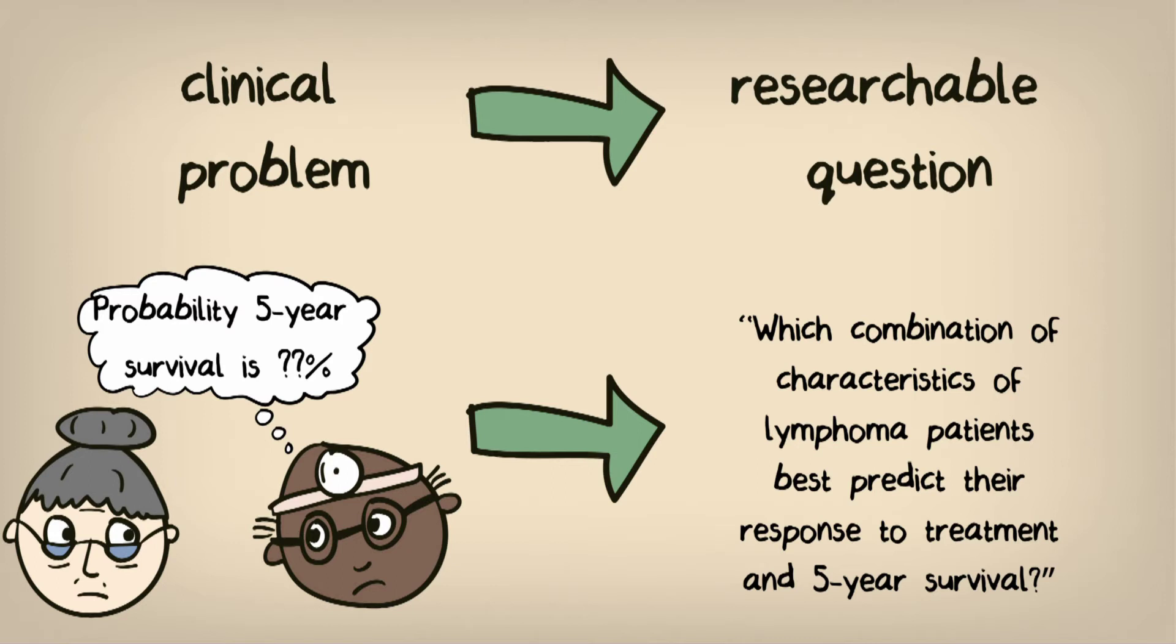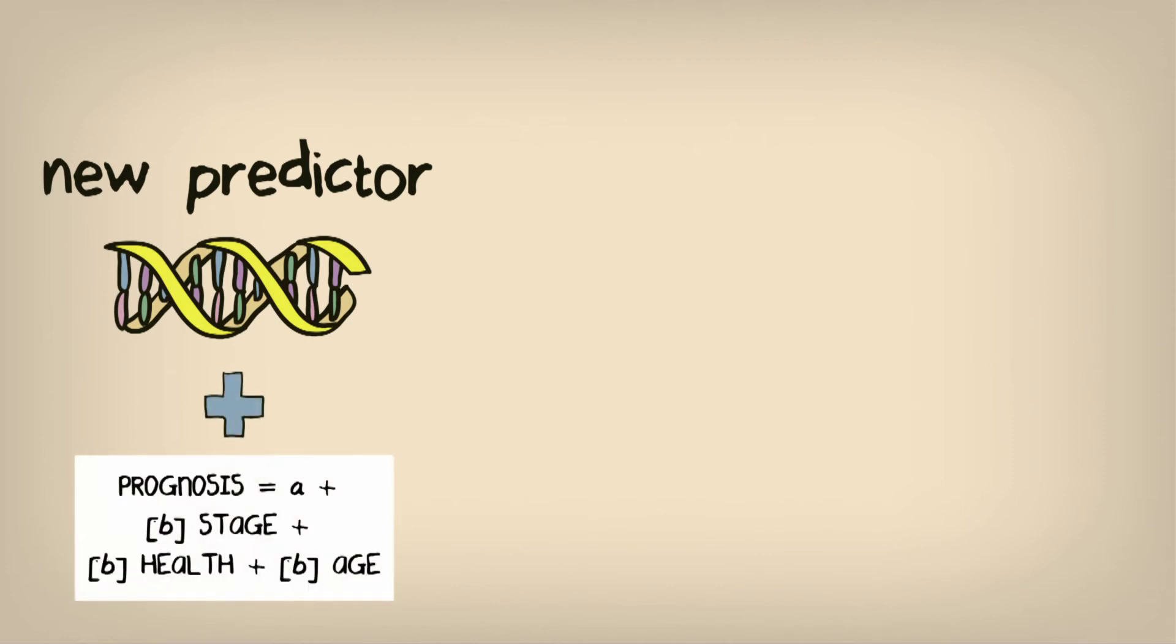Alternatively, an increasingly popular branch of research involves looking at whether individual new predictors, such as new biomarkers or some other kind of measurements, can improve prediction when added to already existing prediction rules.